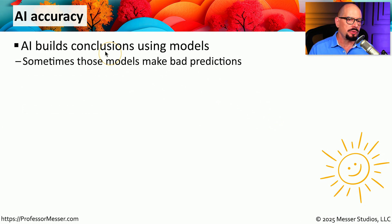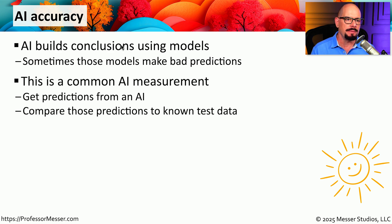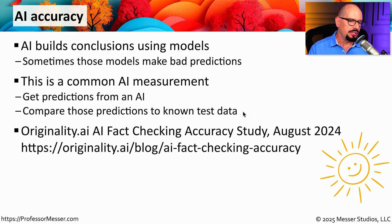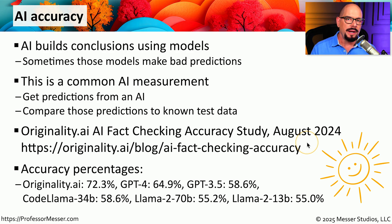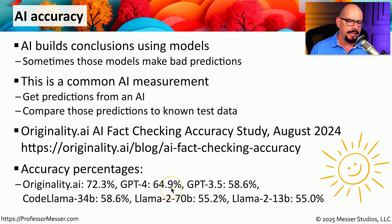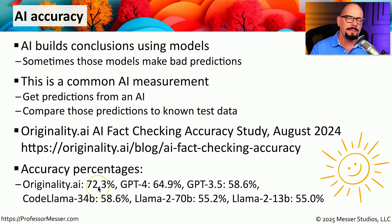Behind the scenes, artificial intelligence creates a conclusion using a model that is provided, and sometimes it makes the wrong conclusion based on that model. Researchers will often perform tests of an AI engine to see how accurate it might be, comparing AI predictions to known test data. One such accuracy test was done by originality.ai in August of 2024. Their own AI engine got a 72.3% accuracy rating, GPT-4 got 64.9%, and GPT-3.5 got 58.6%. As you can see, our current iterations of AI are far from perfect.